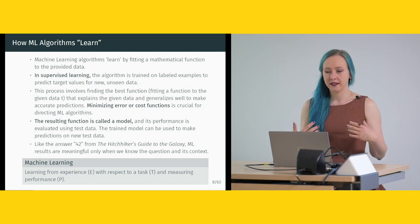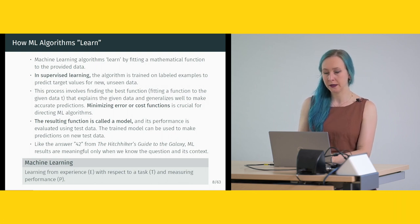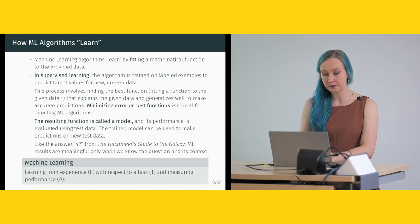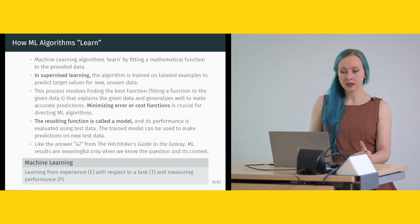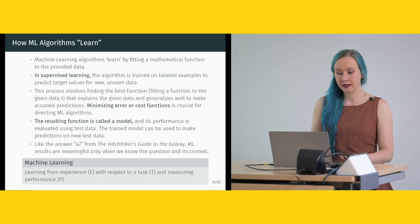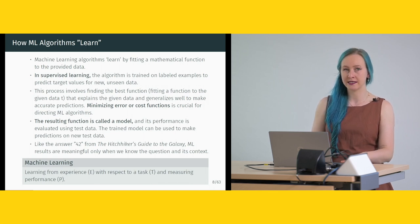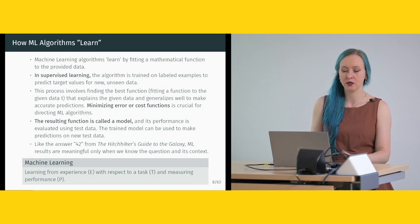To restate this: Machine learning algorithms learn by fitting a mathematical function to provided data. In supervised learning, the algorithm is trained on labeled examples to predict target values for new unseen data. This involves finding the best function that explains the given data and generalizes well. Minimizing error or cost functions is crucial for directing these algorithms. The resulting function is called a model, and its performance is evaluated using test data the algorithm has not seen before. The trained model can then be used to make predictions on new test data.